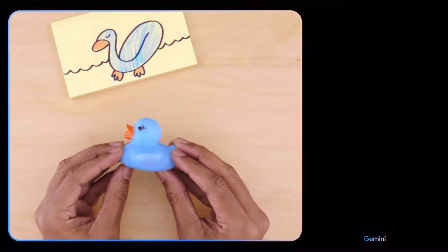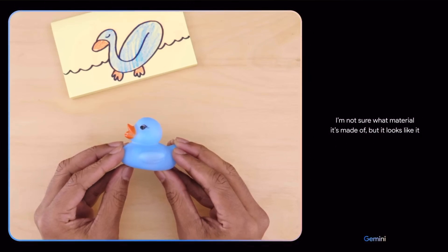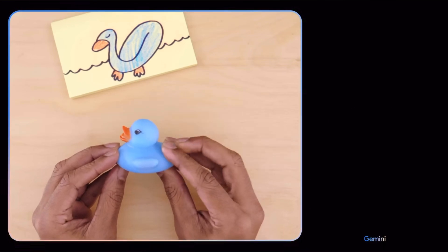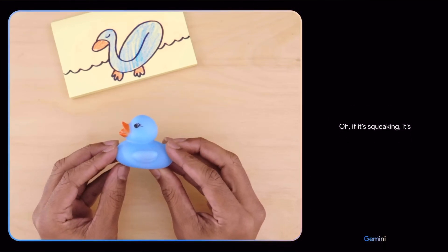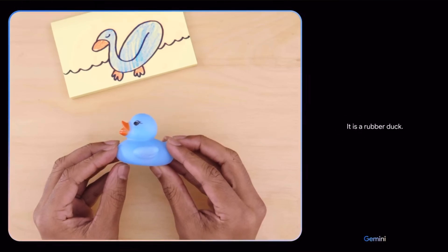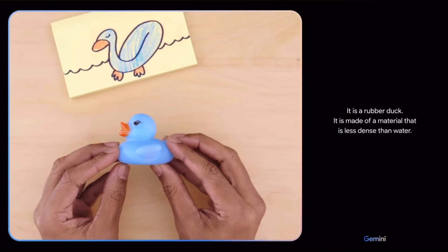Would this float? I'm not sure what material it's made of, but it looks like it might be rubber or plastic. What if I tell you it's making a squeaking sound? Oh, if it's squeaking, it's definitely going to float. Nice. It is a rubber duck. It is made of a material that is less dense than water.